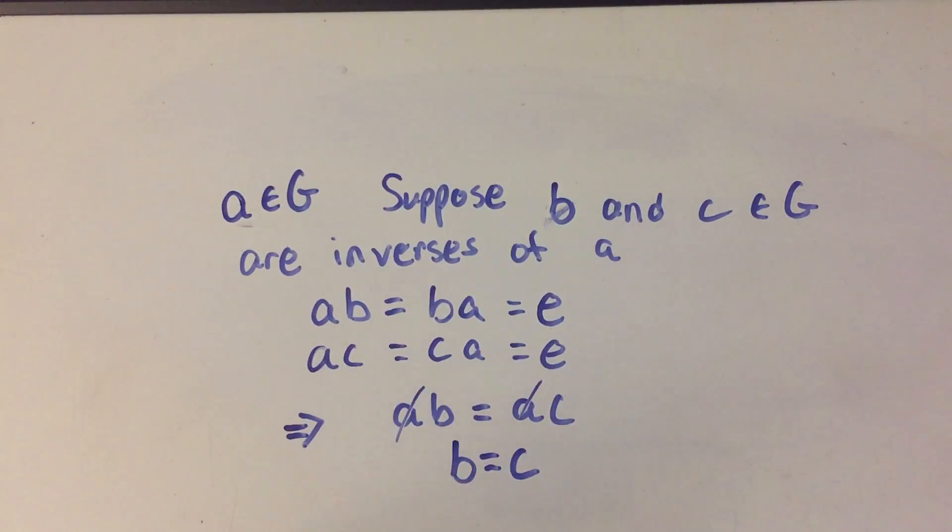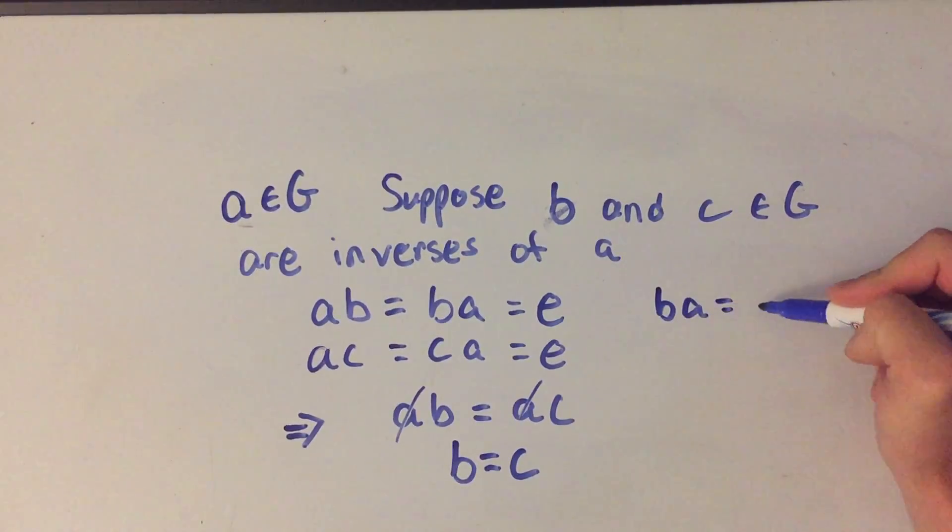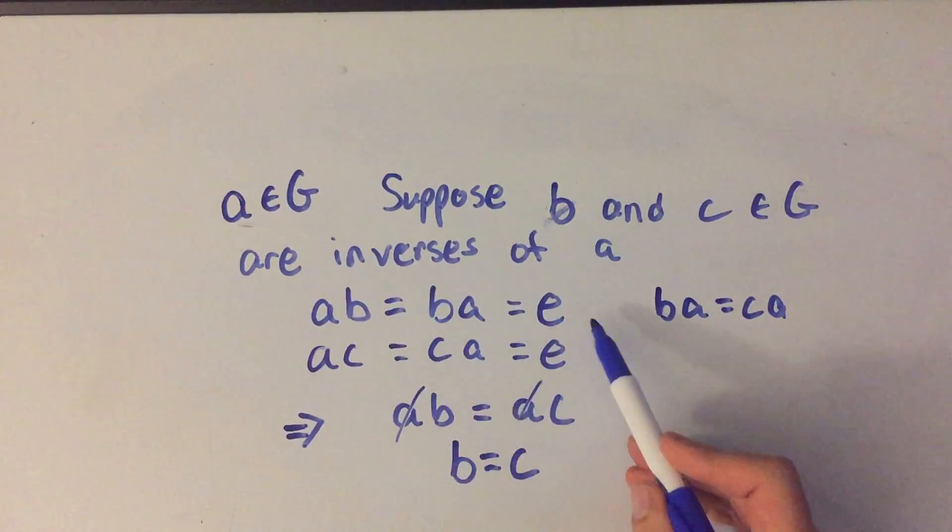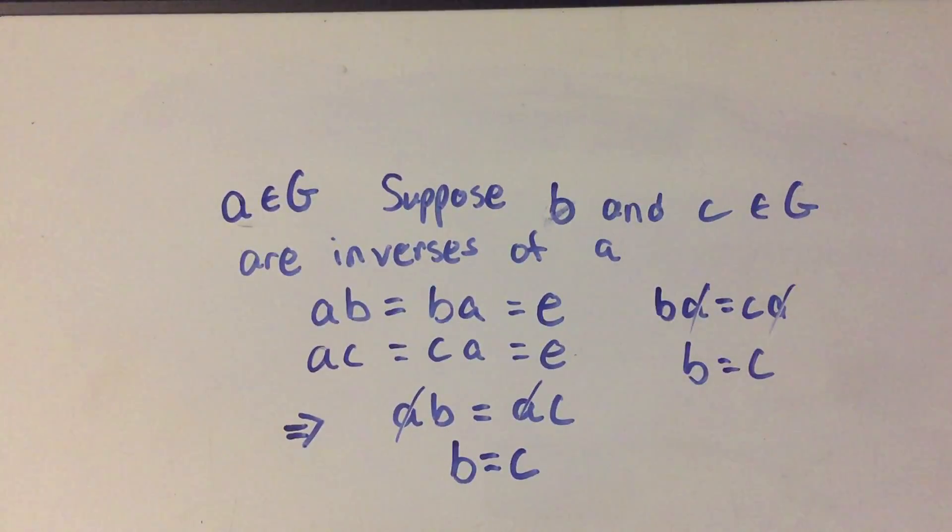So there is actually only one unique inverse element for every element. And so I could have just done this with the other way. I could have said that BA is equal to CA, using the second line here, since they are both also equal to the identity, and then just canceled A on the right, and I'll get the exact same result.